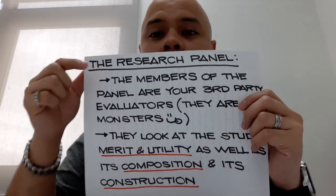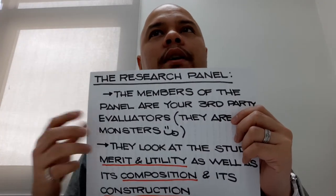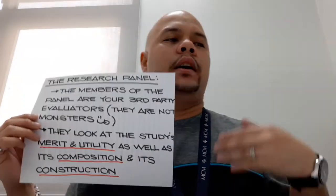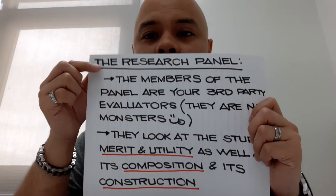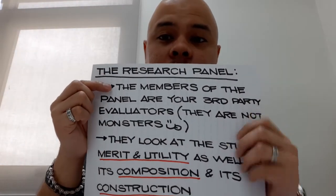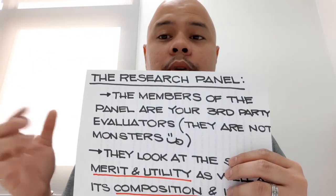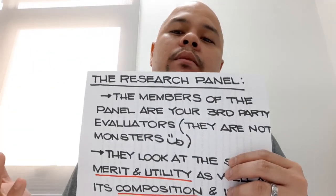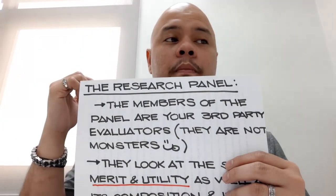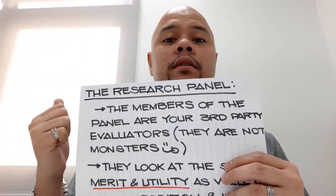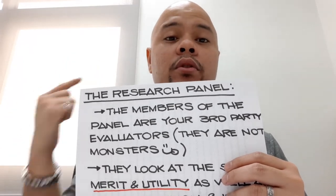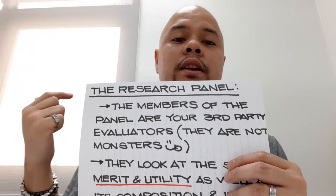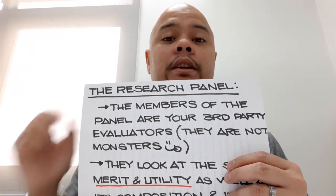And speaking of research panel — why do we need a research panel? Why are they there? The research panel is simply there because these panel members are your third party evaluators. They are there to scrutinize your study because they are somewhat experts in the field. So they are there to scrutinize your study, look into the details of your study, and they are there to help you improve your study as a whole.